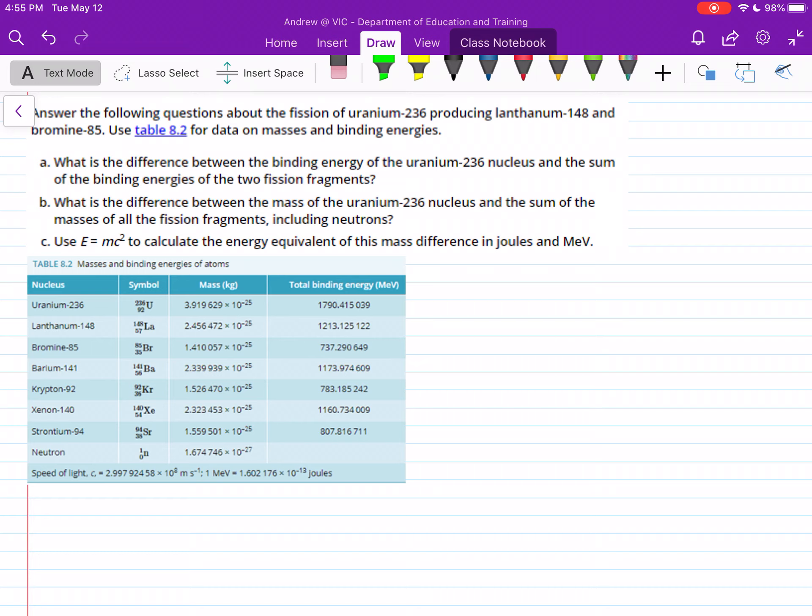Remember, fission is the splitting of atoms, so it's one atom that splits into two. Use table 8.2 for data, so this gives us the masses and binding energies. What's the difference between the binding energy of the uranium-236 nucleus and the sum of the binding energies of the two fission fragments? These two fission fragments are the lanthanum-148 and bromine-85.